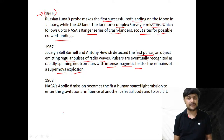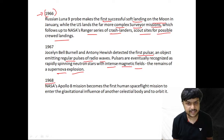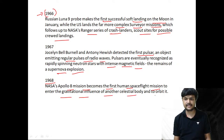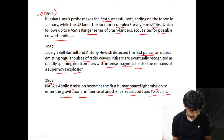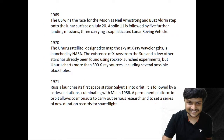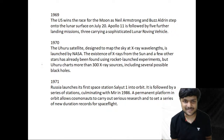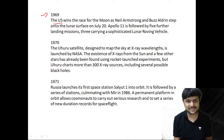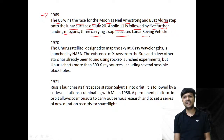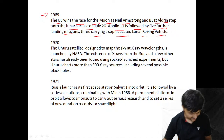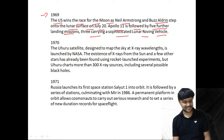In 1968, NASA's Apollo 8 mission becomes the first human spaceflight to enter the gravitational influence of another celestial body and to orbit it. In 1969, the US wins the space race as Neil Armstrong and Buzz Aldrin step onto the lunar surface on July 20th. Apollo 11 was followed by five further landing missions, three of which carried sophisticated lunar roving vehicles.